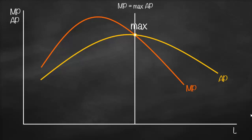Looking at the graph from both sides — from the left, we discover that if average product is increasing, it means that marginal product will have a bigger value compared to average product, which means marginal product will be above average product.